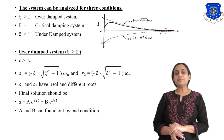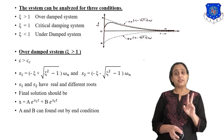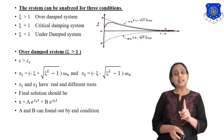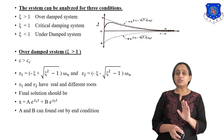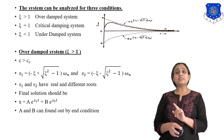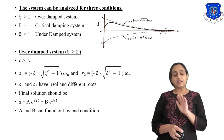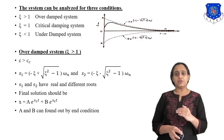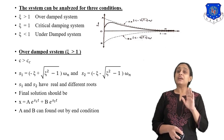For our study, as you can see, we have three systems. First, zeta greater than one; second, zeta equal to one; and third, zeta less than one. If zeta is greater than one it is known as over-damped system; if zeta is equal to one it is known as critically damped system; and if zeta is less than one it is known as under-damped system. Zeta is the damping factor, defined as damping coefficient divided by critical damping coefficient.